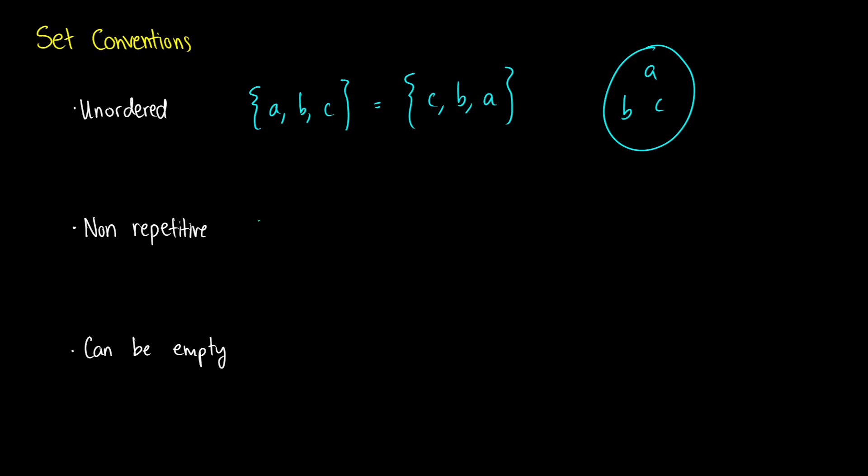Sets are also non-repetitive. We don't care how many times an element is in our set, we just care whether an element is in there or not. So if I give you a set with A repeated four times, this is really just the same thing as a set with A once. The cardinality of this set, regardless of whether we take a look at the one on the left or the right, is one.